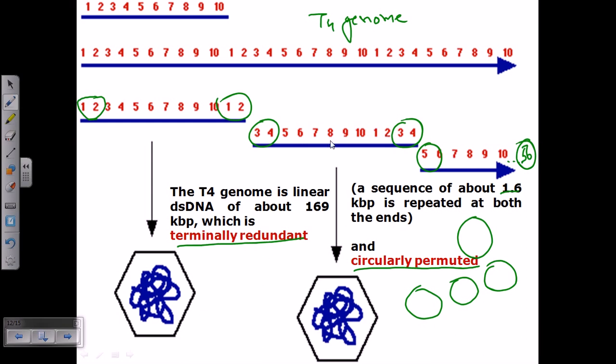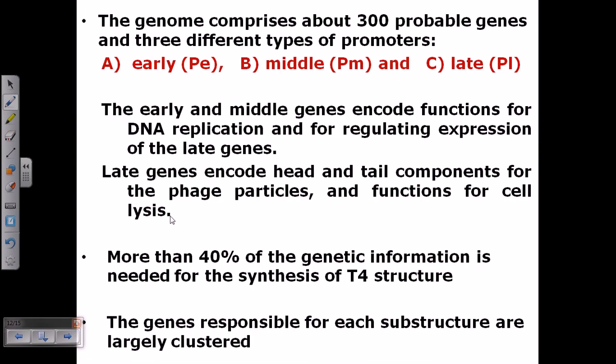Now this terminal redundancy is maintained because, as they are having this kind of terminal redundancy, they are also circularly permuted. That means they can easily form a circular DNA structure out of this linear DNA due to having the same type of genes and DNA at both terminals of the bacteriophage genome.